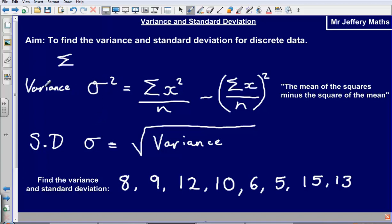So sigma squared, this is what we call the variance. Let's take a look at this formula. We can see that sigma squared, the variance, is equal to the sum of the squares divided by the number of values, subtract the mean, so the sum of the values divided by the number of the values, squared.